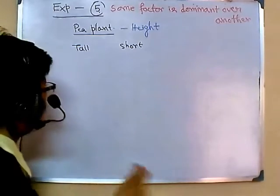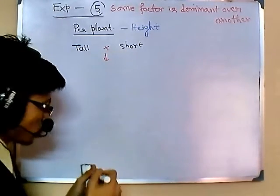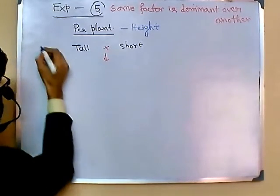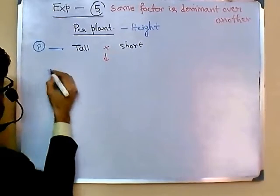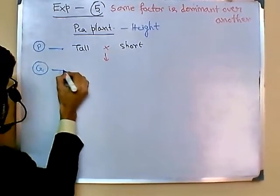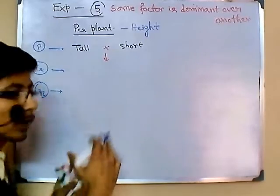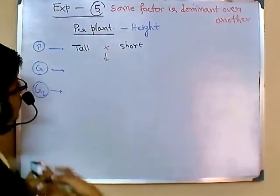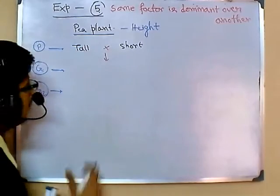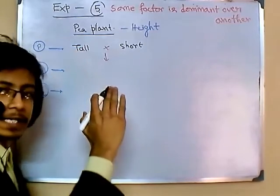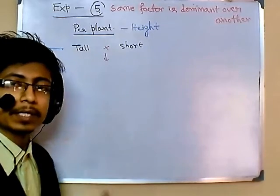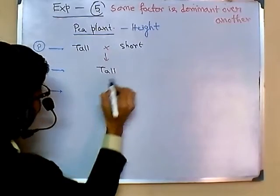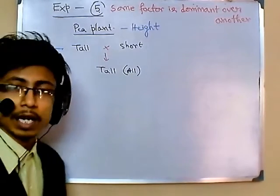He crossed the tall plant with the short plant. In the parent generation — which is generation one — after this cross between a tall plant and a short plant (pure breed), all of the plants in generation one were found to be tall.